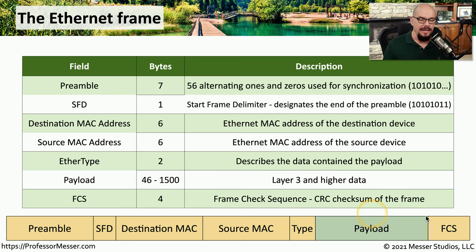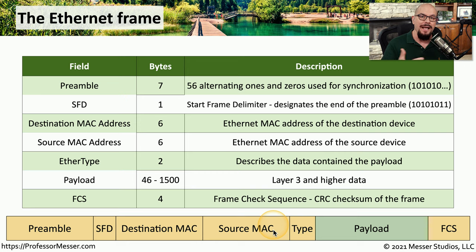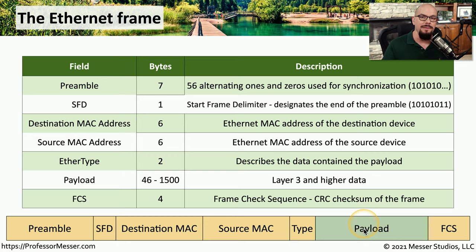And lastly is the FCS, or the frame check sequence. It is a cyclic redundancy check that allows us to make sure that everything received in that ethernet frame has not been corrupted as it was transmitted across the network. Although you don't have to rebuild an ethernet frame as part of your Network+ studies, it's useful to know that inside of this ethernet frame are things like the destination MAC address and source MAC address, which are very useful for determining how switching is used on our network. We also have the payload, which is where the IP traffic is, and that's the bit of data used by routers to send traffic between different IP subnets.